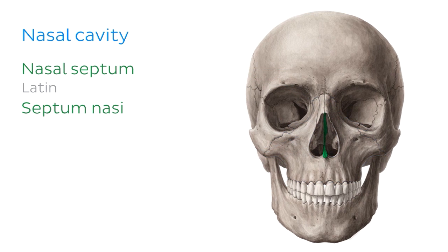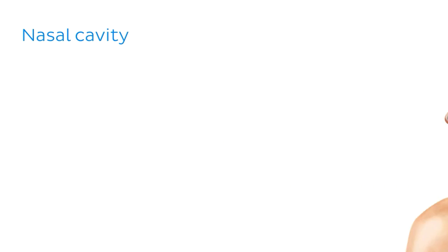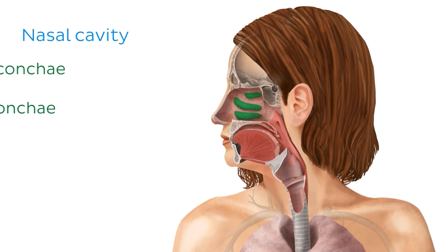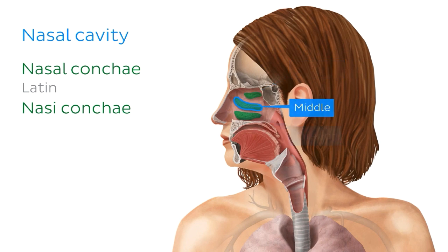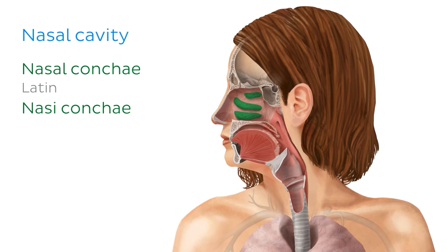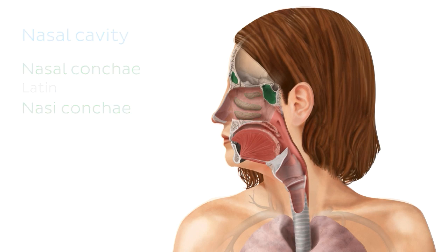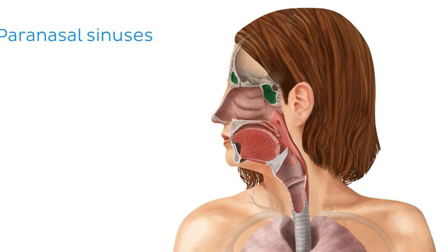There are three elevations found on the lateral walls of the nasal cavities that drain the paranasal sinuses, and they are the superior, middle, and inferior nasal conchae. As we just saw, the nasal conchae found on the lateral walls of the nasal cavities drain the paranasal sinuses.